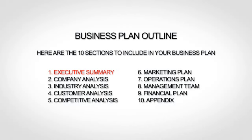The first section is your executive summary, which is essentially the introduction to your business plan. The next section is your company analysis, which gives a little more background. Next up is your industry analysis, where you talk about your market and trends. The fourth section is your customer analysis, where you go more in depth about your target market. The fifth section is your competitive analysis, where you provide an analysis of your competition, including what differentiates you from your competitors.